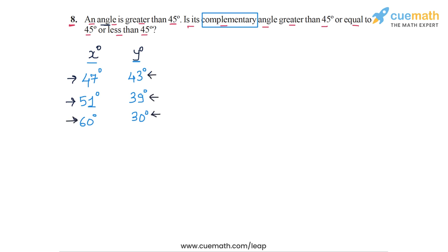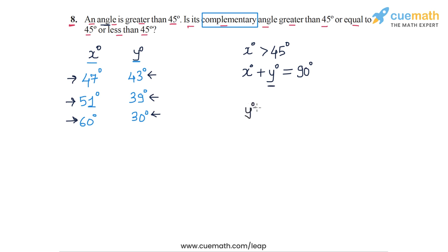It's very simple to understand. If the original angle x is greater than 45 degrees, and the sum of x degrees and y degrees is equal to 90 degrees, then the second angle y must be less than 45 degrees. Because if y is also greater than 45, then x plus y will become greater than 90, since both x and y are each greater than 45.